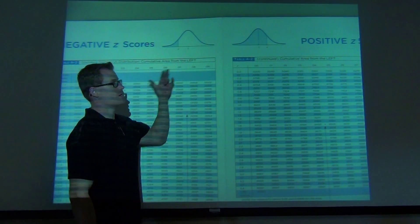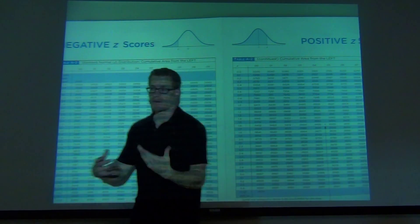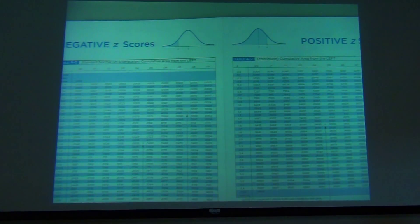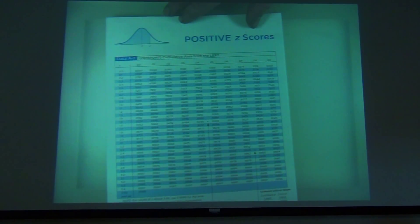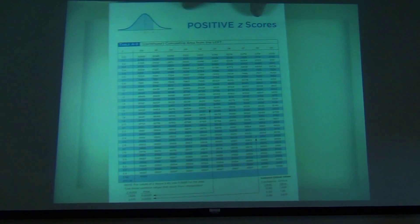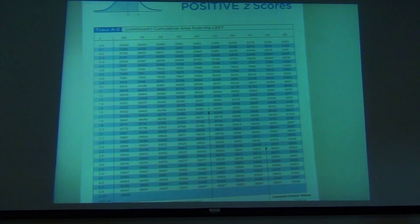It says cumulative area from the left. So let's go ahead and see if we can do this. Should we be looking in our negative Z scores or our positive Z scores? What do you think? Yeah, definitely, because we have a positive Z score. So let's look at that positive Z score.